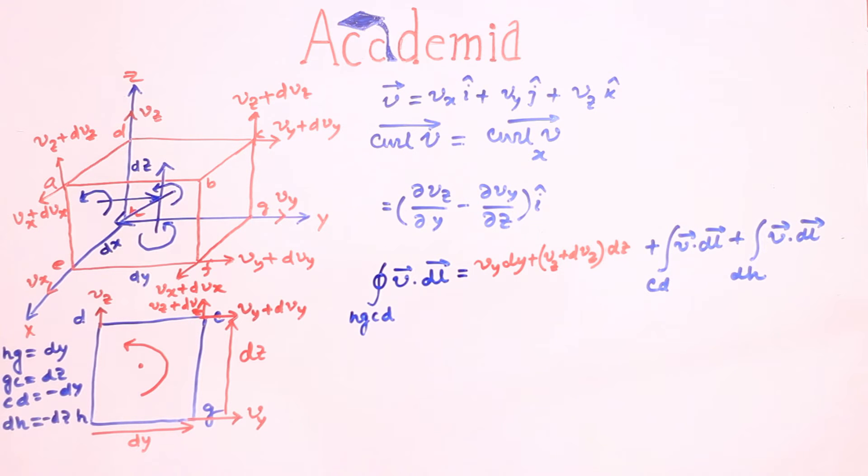Here along cd, V is vy plus dy which is constant and comes out of the integration and integration dl over cd is cd which is minus dy.